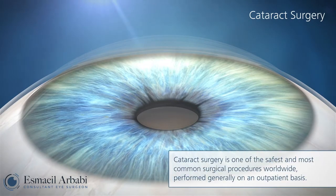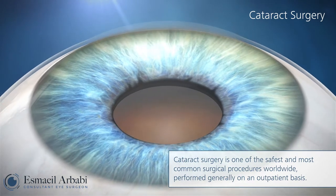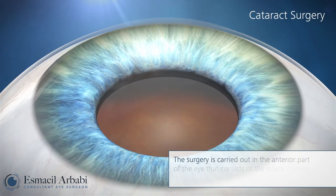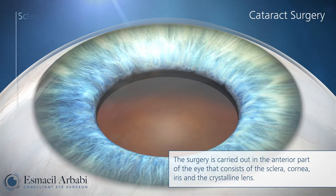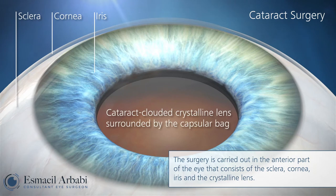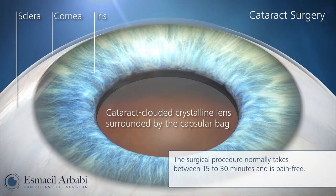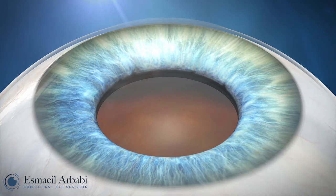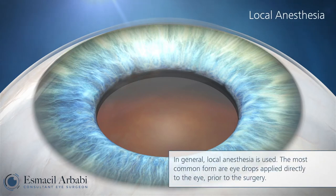Cataract surgery is one of the safest and most common surgical procedures worldwide, performed generally on an outpatient basis. The surgery is carried out in the anterior part of the eye, which consists of the sclera, cornea, iris, and crystalline lens. The surgical procedure is pain-free; in general, local anesthesia is used, the most common form being eye drops applied directly to the eye prior to the surgery.